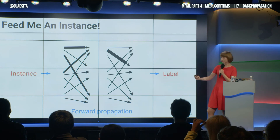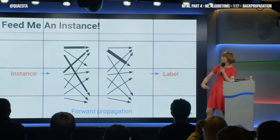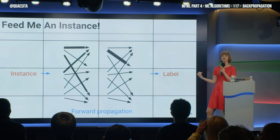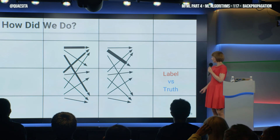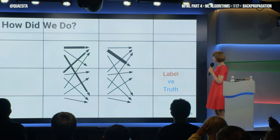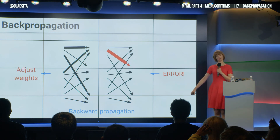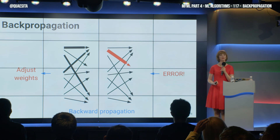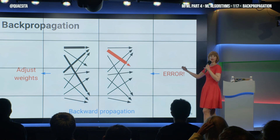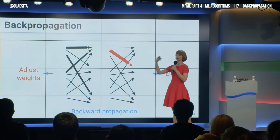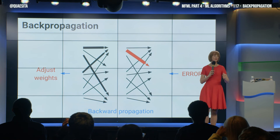We take an instance and we send it through the network just as we sent those numbers through earlier to get a label out on the other side, and we call that forward propagation. And then when we look at the label, we compare it with what the true answer was and we see a mismatch. Our first response is: whom do we blame? To figure out where we should start making adjustments, we essentially propagate the effects — the influence of that error — back through the network to find where and how much we should make the adjustments. And that's what the backpropagation algorithm is doing for you.